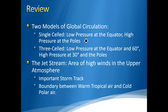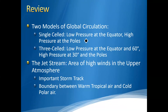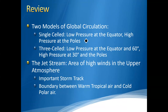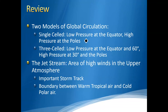Just a quick review: there are two models of global circulation. The single-cell model is a crude but good introductory model, and then the three-cell model. From the three-cell model, remember that low pressure is present at the equator and at 60 degrees, and high pressure is present at 30 degrees and the poles. The jet stream is a boundary between warm air toward the equator and cold air toward the pole, creating a strong storm track that is much stronger and more intense in the wintertime and much weaker in the summertime. In the next module, we're going to talk about ocean currents, El Niño, and La Niña.